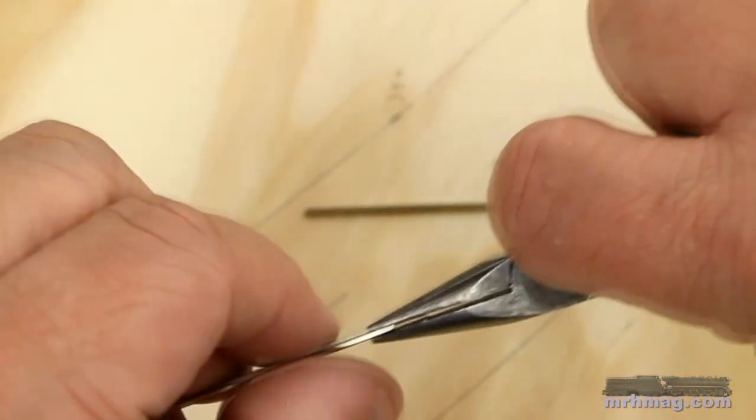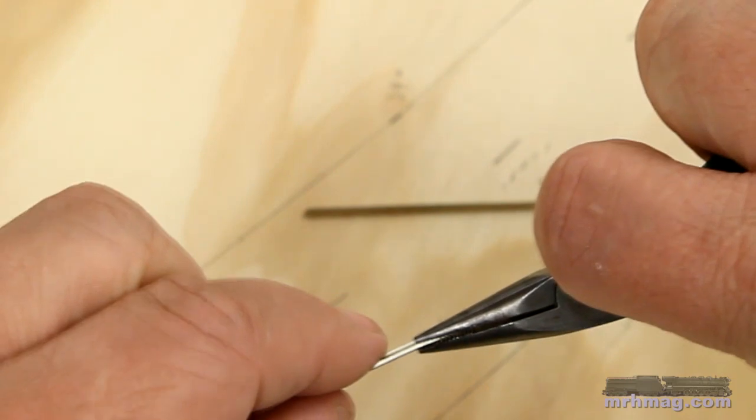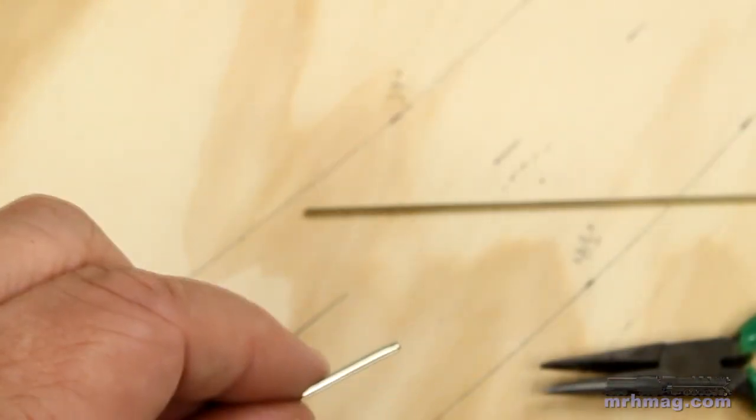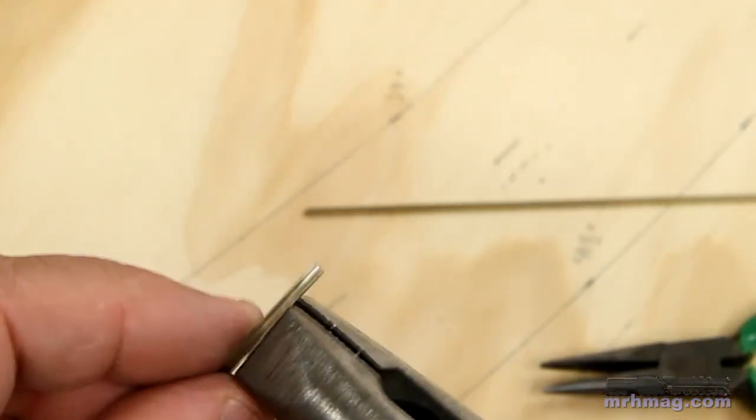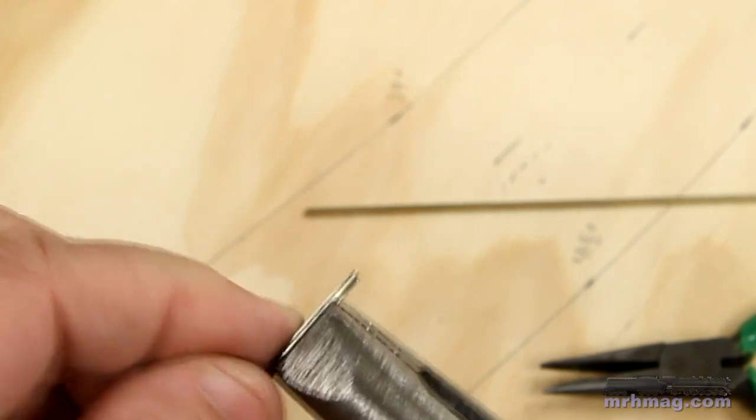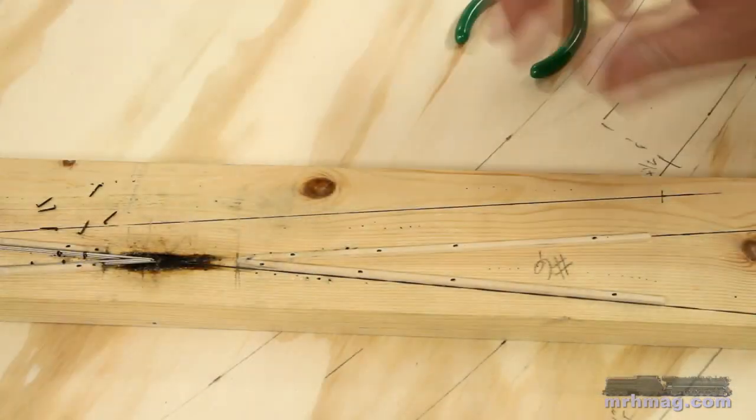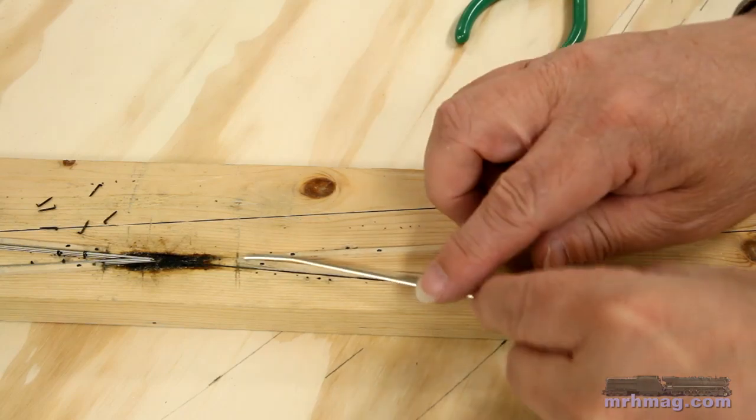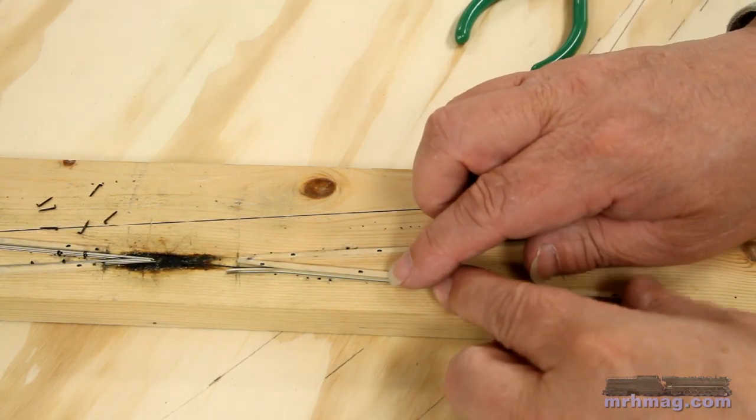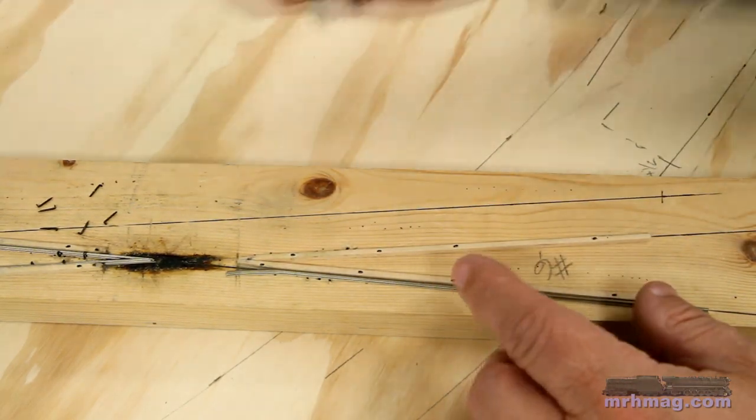I use pliers to bend wing rails into the frog end of the closure rails. The closure rails go on the outside of the strip wood guides. Again, I use a couple of spikes to hold them in place.